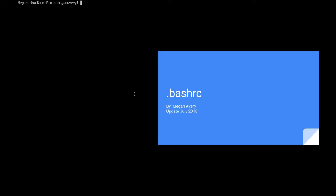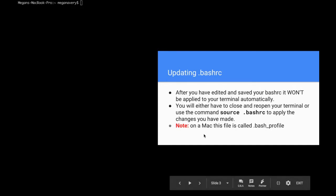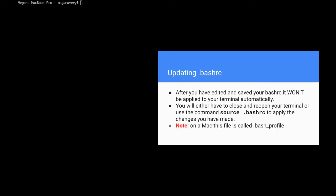This tutorial is going to cover the bash rc. A bash rc is a file used to configure what your command line looks like and how it behaves. It can involve special coloring of certain commands and even creating new commands for you to use. Every time you update a bash rc and save it, it won't automatically be applied to your terminal. You either have to exit your terminal and reopen it, or use the command 'source .bashrc' to apply the changes.